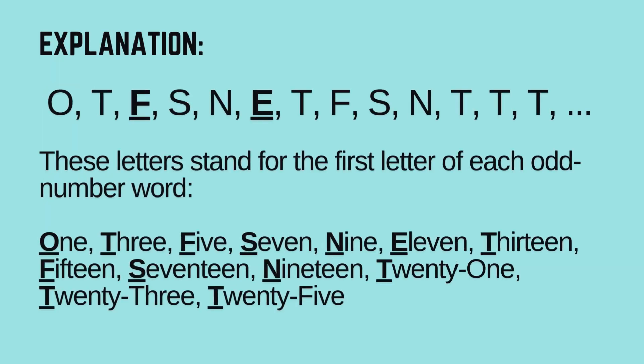Here's the sequence with the missing terms filled in: O, T, F, S, N, E, T, F, S, N, T, T, T. These letters stand for the first letter of each odd number word: 1, 3, 5, 7, 9, 11, 13, 15, 17, 19, 21, 23, 25.